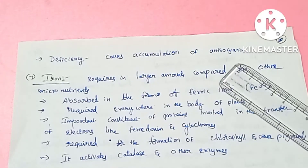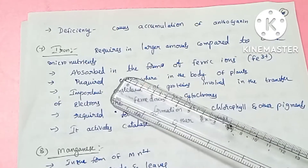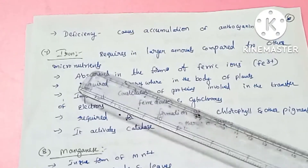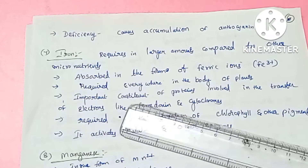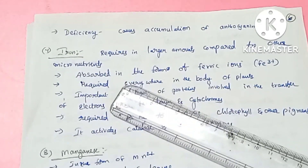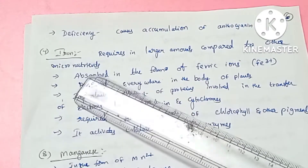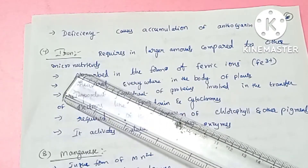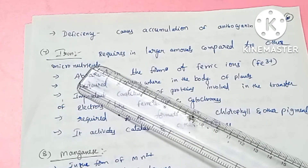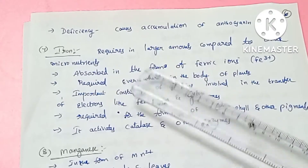The next element is iron, which is a micronutrient. There are a total of 8 micronutrients. Compared to all micronutrients, iron is required in the largest amounts, but it is still a micronutrient.